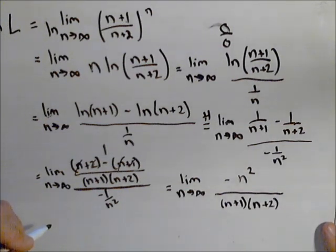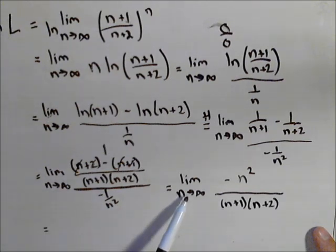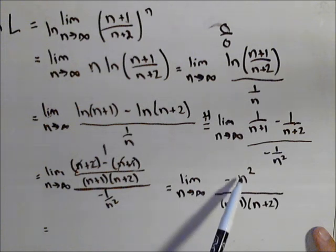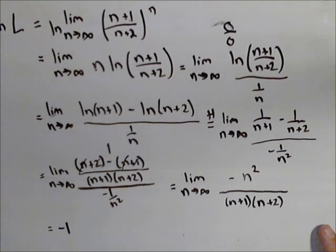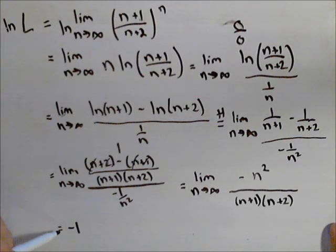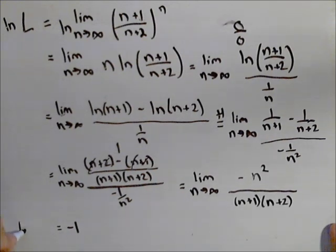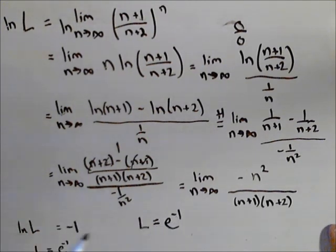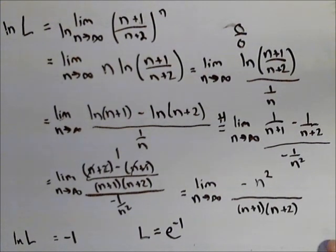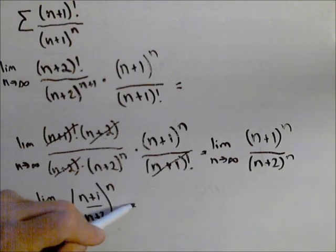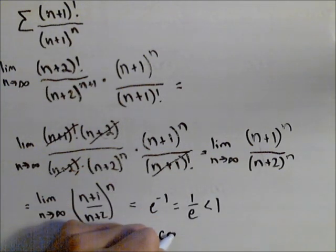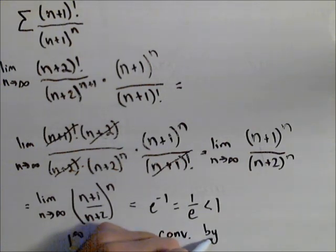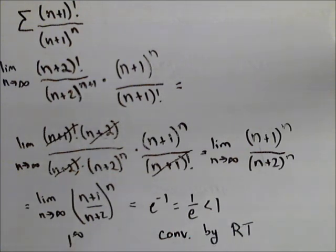That negative is quite important. So ln of L equals negative one, which means L equals e to the negative one, or one over e. Since one over e is greater than zero but less than one, our series is in fact convergent by the ratio test, and we are done.